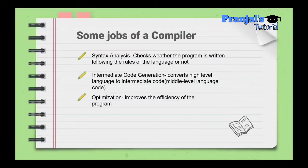When we use intermediate code generation, we generate the machine language and then generate the object file. The third job is optimization, which improves the efficiency of the program.